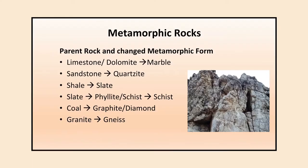Some examples of how parent rocks change into metamorphic rocks: limestone or dolomite changes to marble; sandstone, a sedimentary rock, metamorphoses into quartzite; shale metamorphoses into slate, then further into phyllite and schist; coal metamorphoses into graphite or diamond; and granite changes into gneiss.